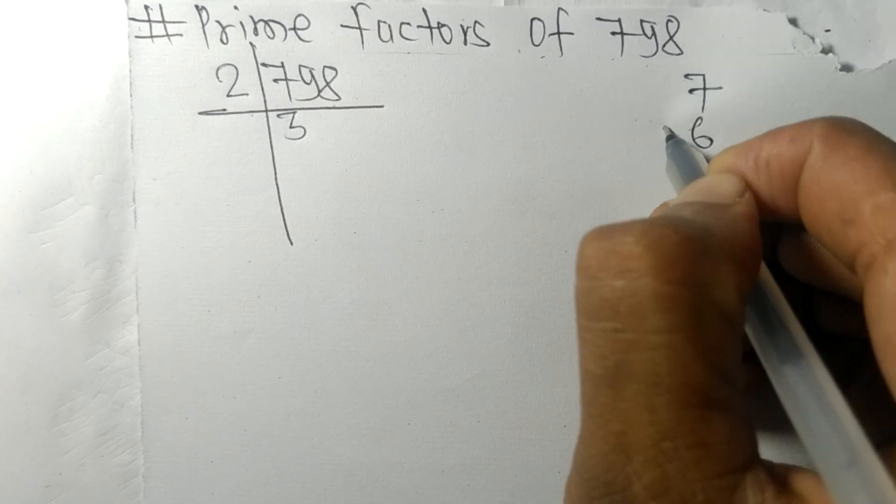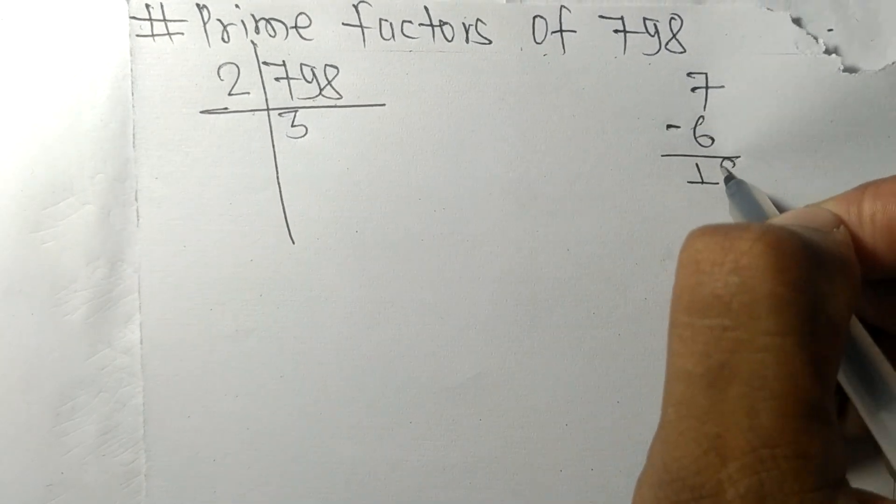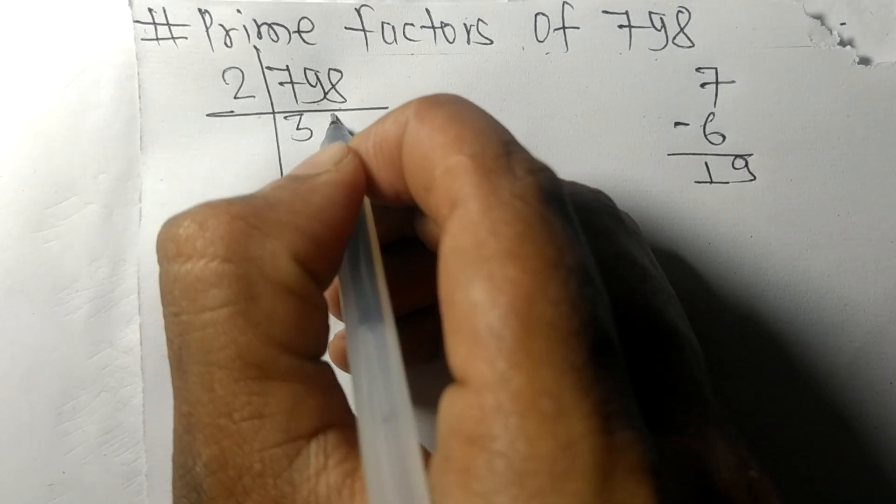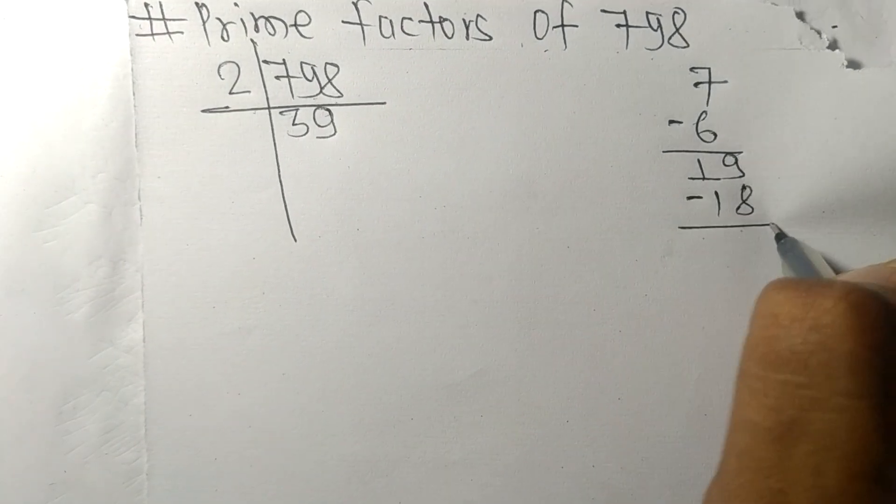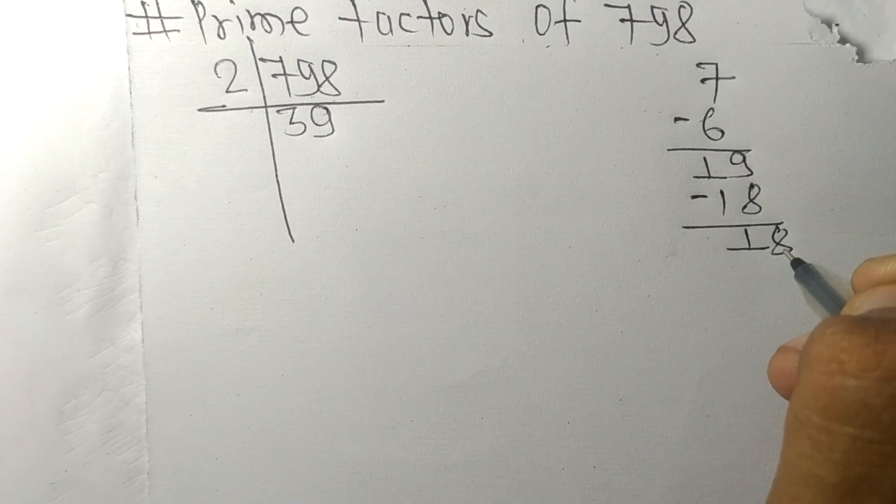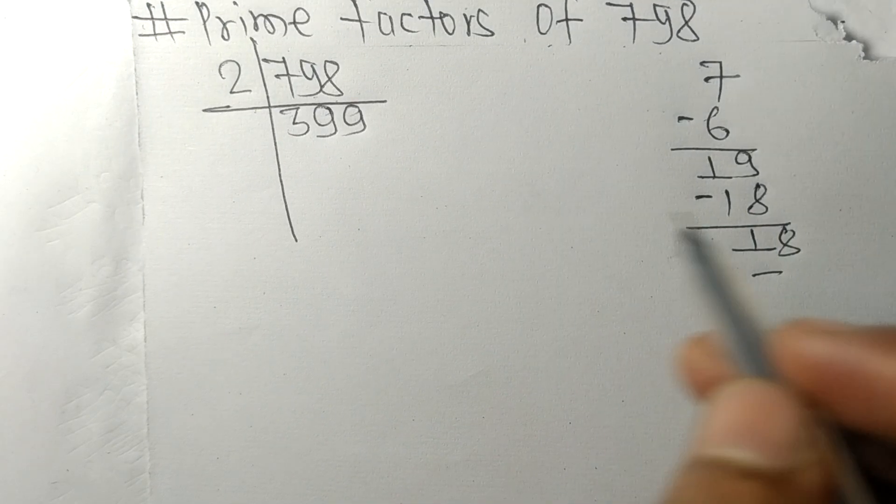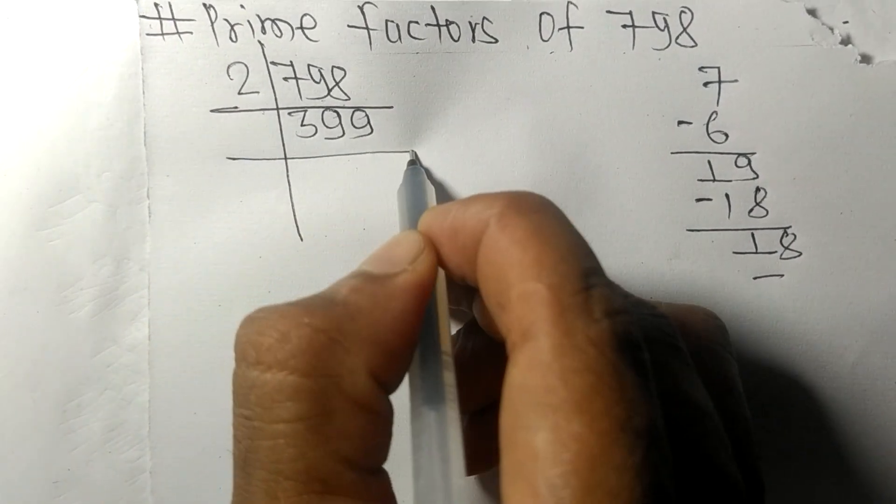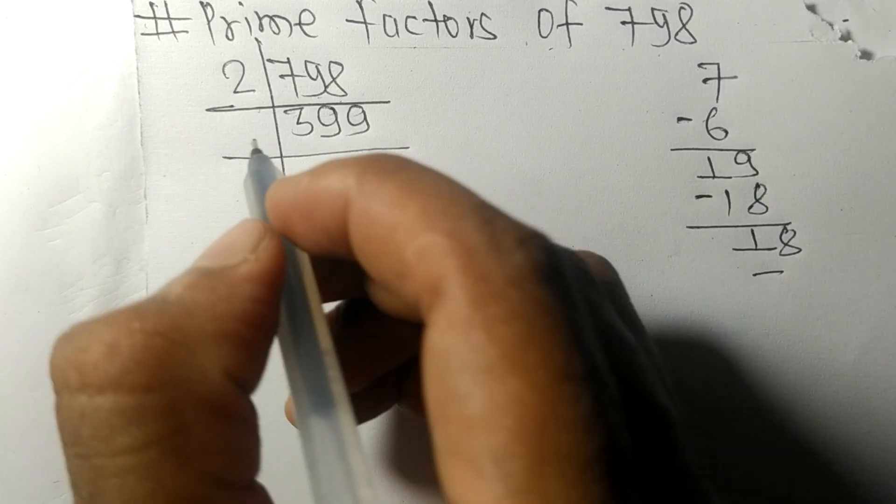1, and this 8, 18. 2 times 9 means 18. So now we got 399 which is exactly divisible by 3. 3 times 1 means 3, 3 times 3 means 9, 3 times 3 means 9. Now we got